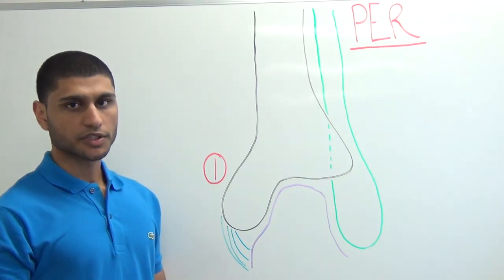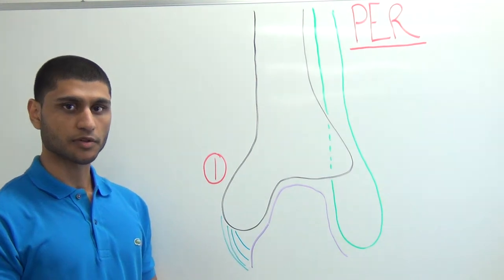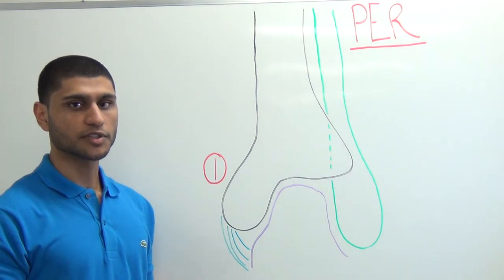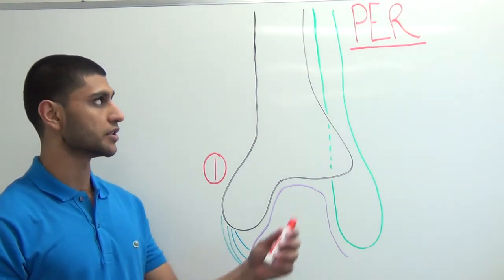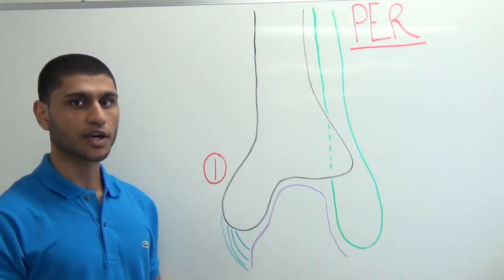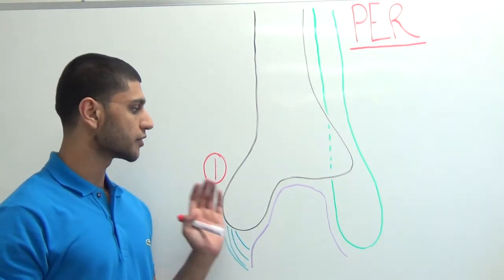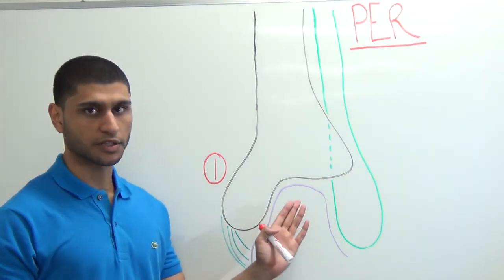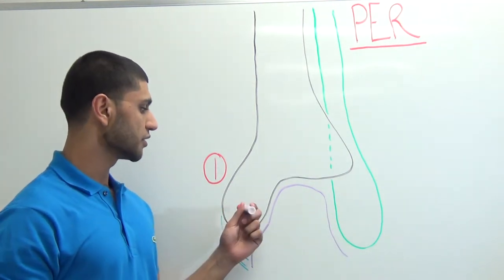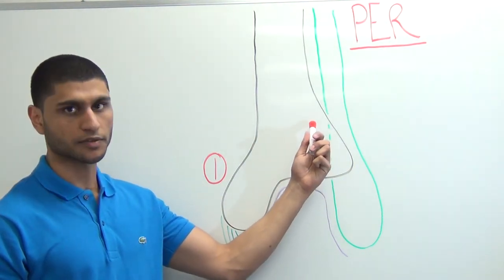There are four major classification systems in Lauge-Hansen. Two of them describe the foot's position as pronated during the time of injury, and two as supinated. We'll begin with the pronation injuries, starting with PER — pronation external rotation. PER describes an injury in which the foot is in a fixed pronated position and some force causes the talus to rotate laterally. There are four stages in PER, and starting medially, we work our way in a clockwise fashion until we end up at the posterior aspect of the ankle joint.